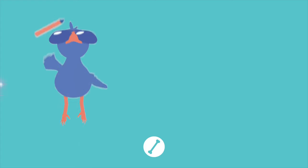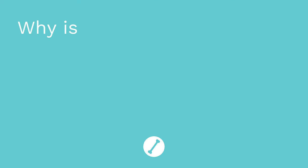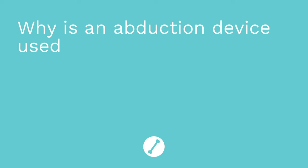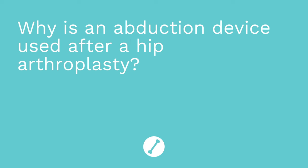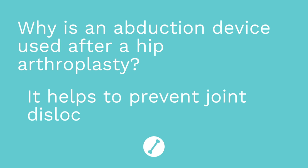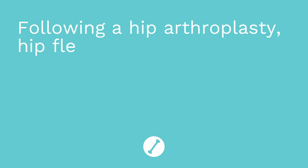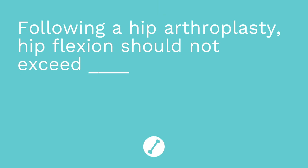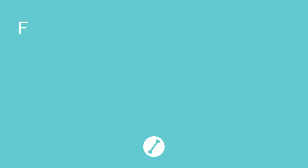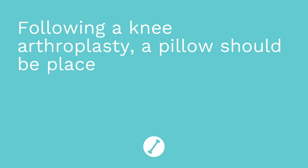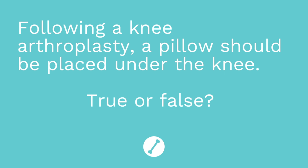It's time for a quiz — I have three questions for you. First question: why is an abduction device used after a hip arthroplasty? The answer is it helps to prevent joint dislocation. Question number two: following a hip arthroplasty, hip flexion should not exceed blank degrees. The answer is 90. Question number three: following a knee arthroplasty, a pillow should be placed under the knee — true or false? The answer is false.